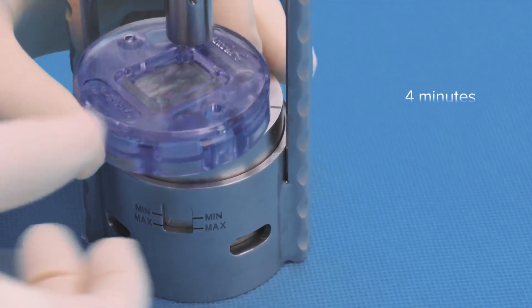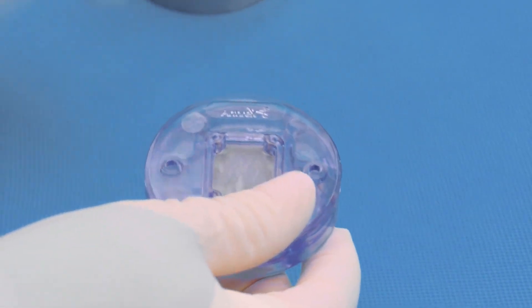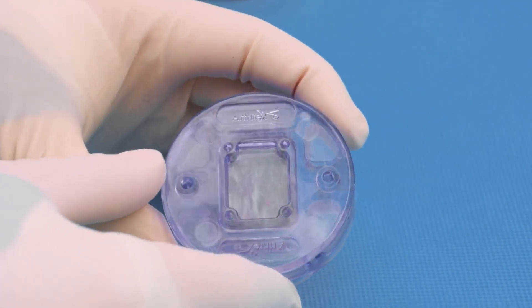After a minimum of 4 minutes, the plates can be removed from the press. The graft will be approximately 22 mm by 27 mm.